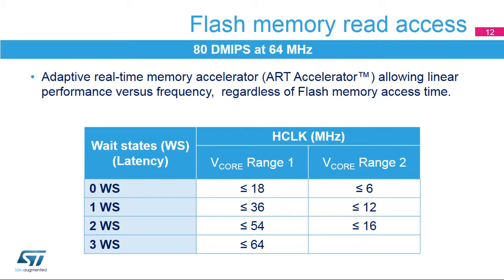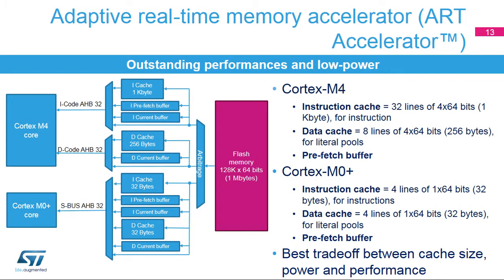Thanks to the Adaptive Real-Time Memory Accelerator, the ART Accelerator, the program can be executed with 0 wait states independent of the clock frequency. This provides an almost linear performance in relation to frequency and allows you to reach 80 Dhrystone MIPS at 64 MHz. The ART Accelerator brings outstanding performance and reduces dynamic power consumption. It consists of a Cortex-M4 1KB instruction cache, 256 KB of data cache, and a pre-fetch buffer.